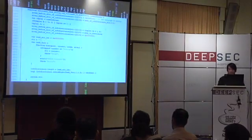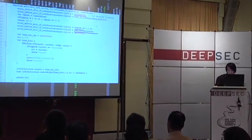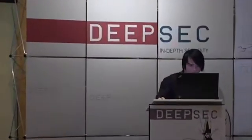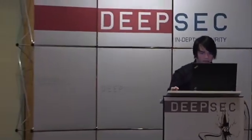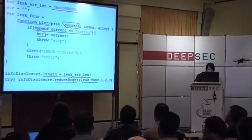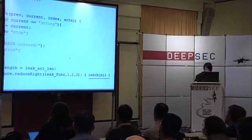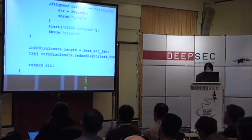This is how we can read from the program. You see the code implementation here. I'm setting the length field to the huge value, then invoking the reduceRight function with a leak function as callback. I get the current element, which is under my full control because I set the data type to string. I check if the data type is really a string, set a variable, throw an exception to exit the reduceRight function, and return the string. Then I can read from the string and do other things.